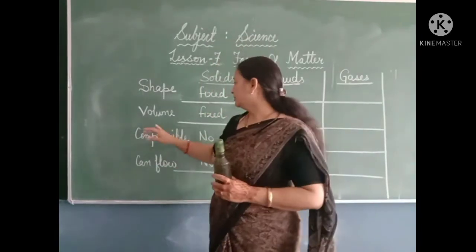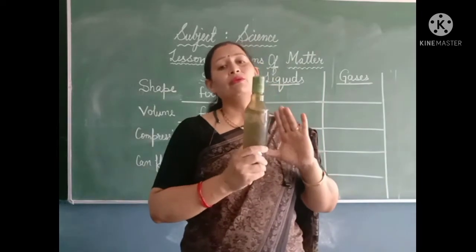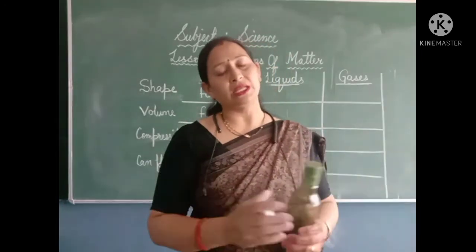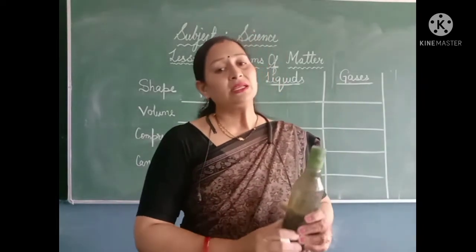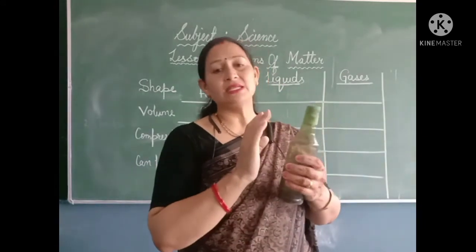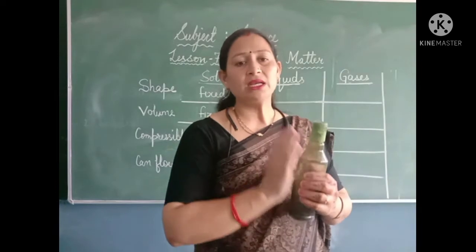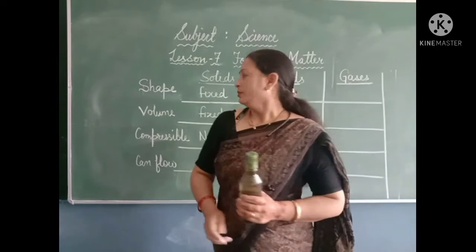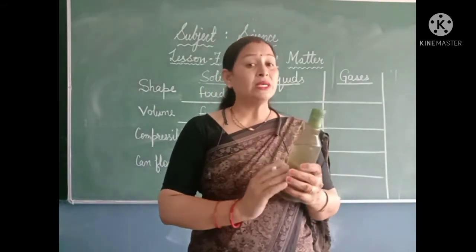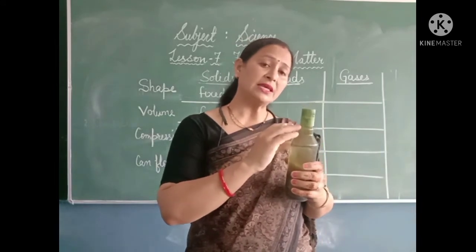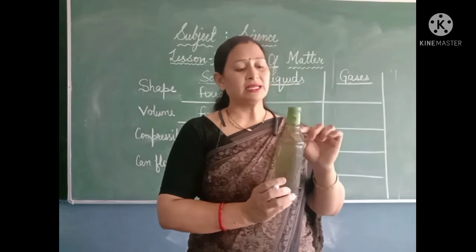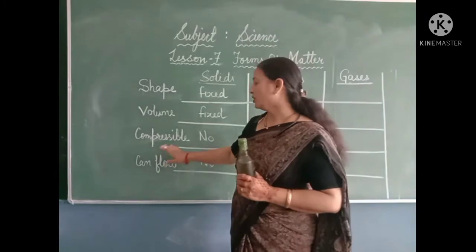The second property is volume. This water will occupy the same space in another container or vessel too. It means the volume of liquid is fixed. Liquids occupy the same space — if it is 1 liter, it takes the space of 1 liter in another vessel too. The next is compressible or not. If I compress or squeeze this bottle, I am not squeezing the water. The air above the water is getting compressed, not the water. So liquids are not compressible.